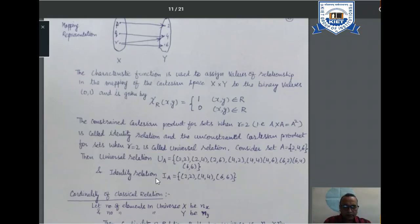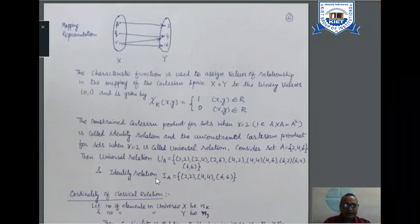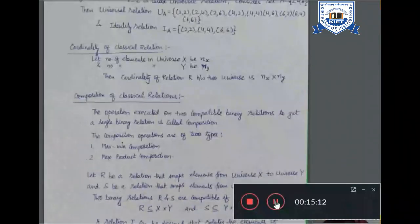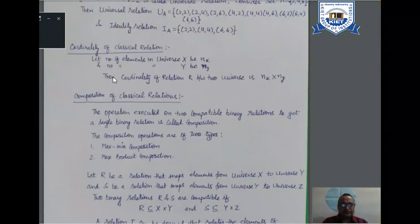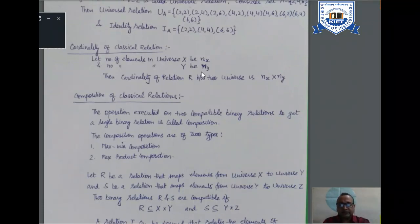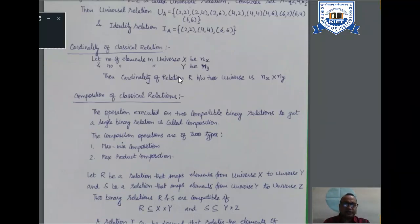Now let us come to the cardinality of classical relations. In a relation we are having two sets — set X and set Y — where the number of elements in set X is nx and the number of elements in set Y is ny. The cardinality of the relation X cross Y will be nx into ny. Suppose three elements were there in set X and three elements in set Y — the cardinality of the relation X cross Y will be 9.